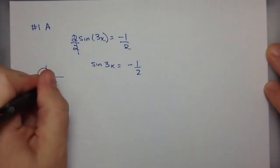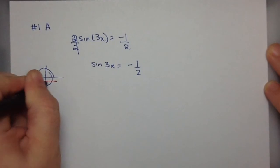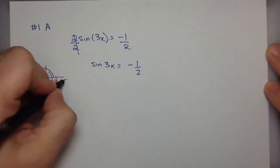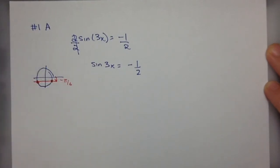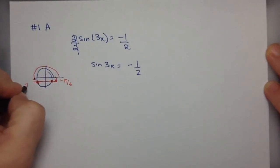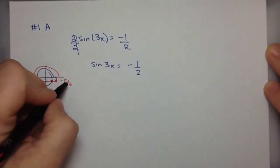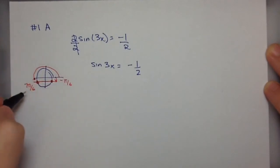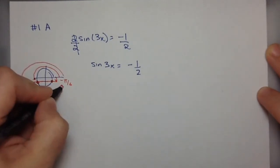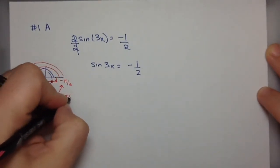This is why drilling the unit circle and memorizing it is really useful. Thinking about this, the angle is negative π over 6 and this angle is 7π over 6. Now we never want to go negative, so instead of writing this as negative π over 6, we write it as 11π over 6.